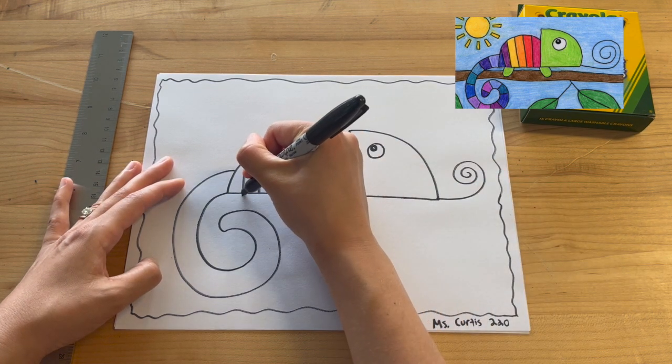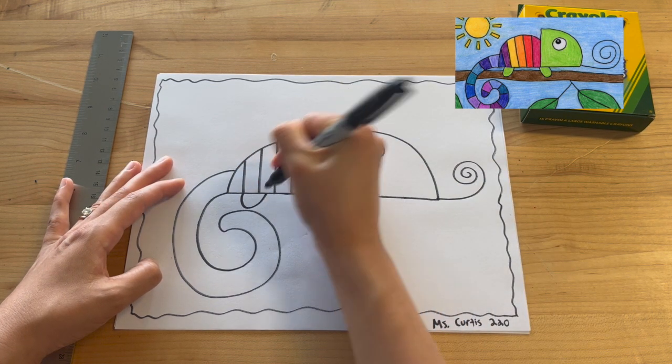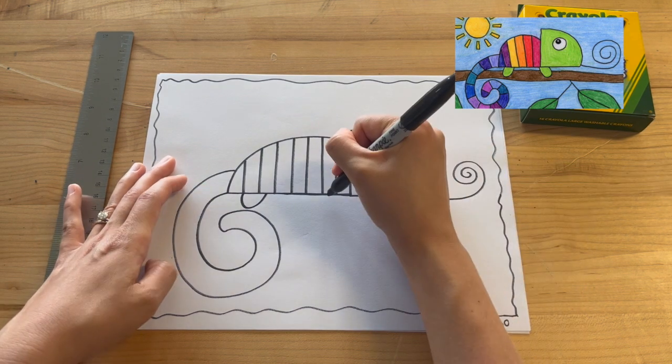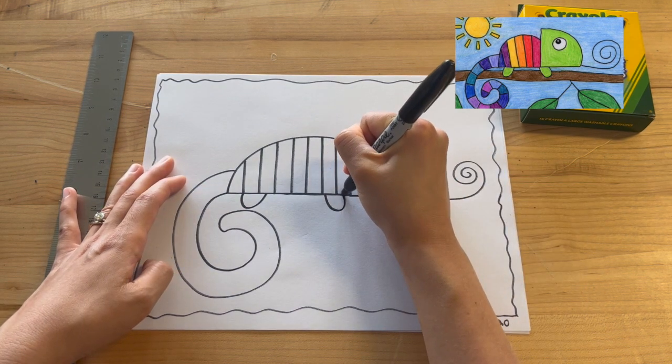Now let's add two curving feet, one in the back, one in the front. I just kind of angle it out just like so.